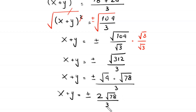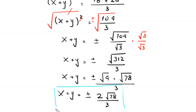So the two solutions for x plus y are plus or minus 2 times root 78 over 3. Thank you.